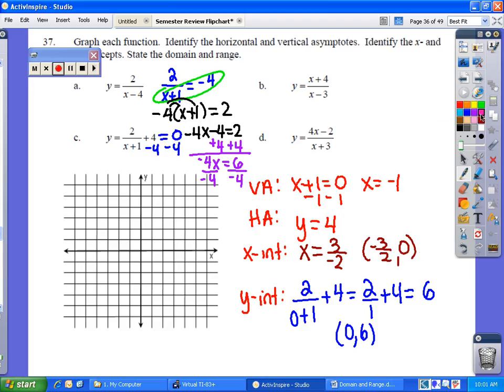So now the first thing you want to do is your asymptote. So we have an asymptote at negative one and four. Then you want to put in your intercepts, so negative three over two is in between negative one and two. And then we also have it at zero six, which is up here.